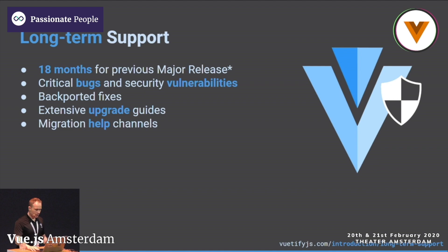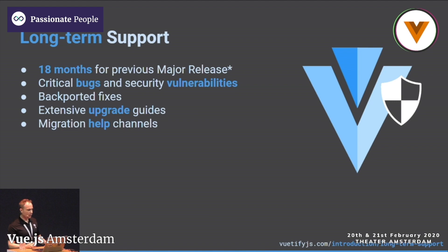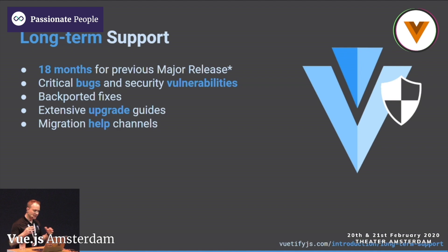One thing I'm very proud of — not many open source projects can do this — but we offer long-term support. Starting from version 1.5 until July, and once we release version 3, we'll iterate one more minor on the 2.0 branch, then that will be long-term support for 18 months. Security vulnerabilities and critical bugs get fixed immediately. We also work extensively to backport fixes, often working with community members still on older versions. We're also improving upgrade guides to get people to the latest version.